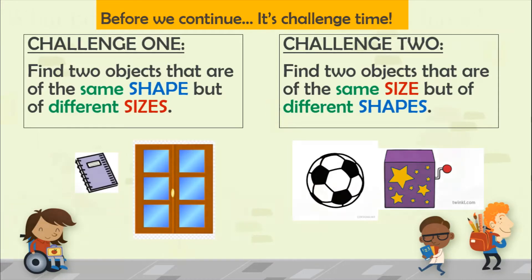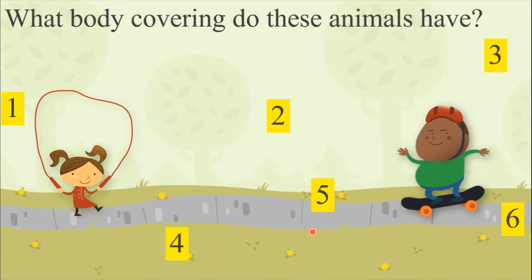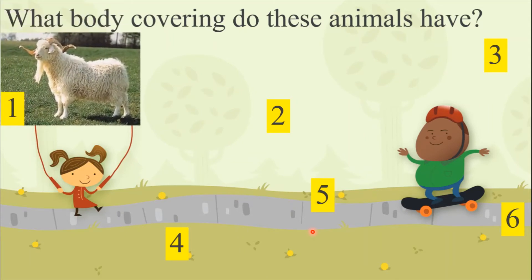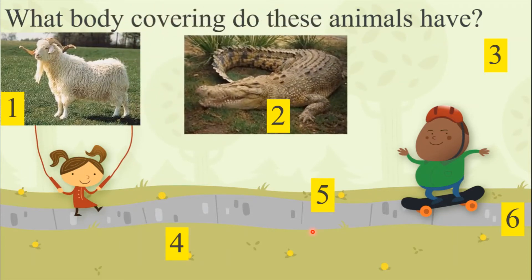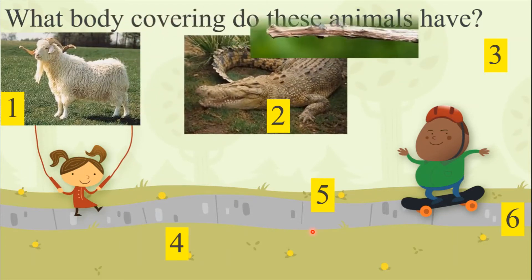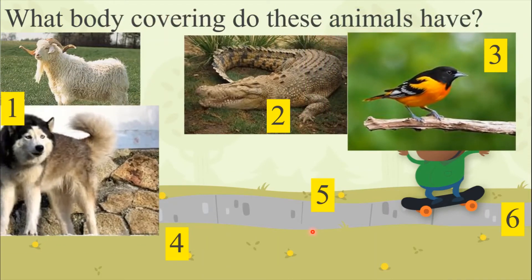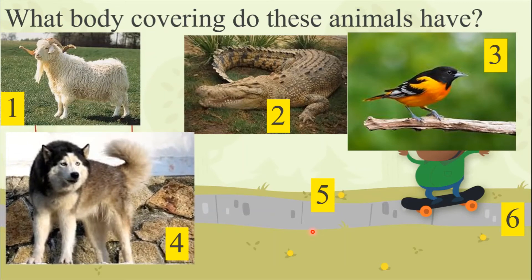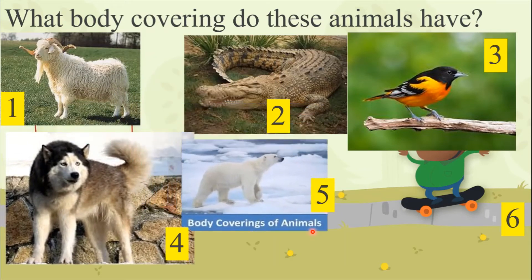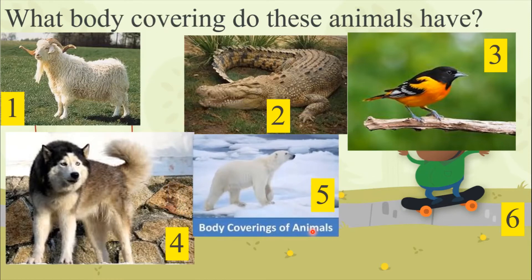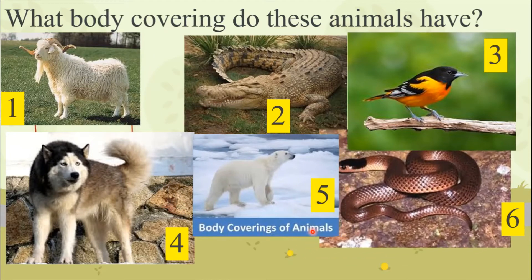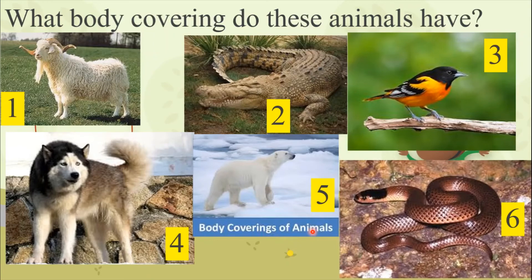Then we talked about what body covering animals have. The first animal has wool, the second has scales, the third has feathers, animal number four has fur, animal number five also has fur, and animal number six has scales as body covering.